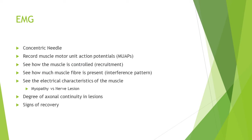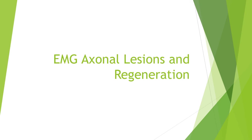For EMG, we use a concentric needle to record muscle motor unit action potentials (MUPs). We can see how muscles are being controlled by the brain — the recruitment patterns — and how much muscle fiber is present via the interference pattern. We can see whether muscles are myopathic or neurogenic, and assess the degree of axonal continuity in nerve lesions, as well as signs of recovery.